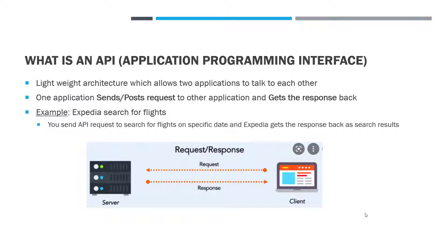API is an application programming interface. It's a lightweight architecture which allows two applications to talk to each other. One application sends or posts requests to the other application, and the other application gets sends the response back.